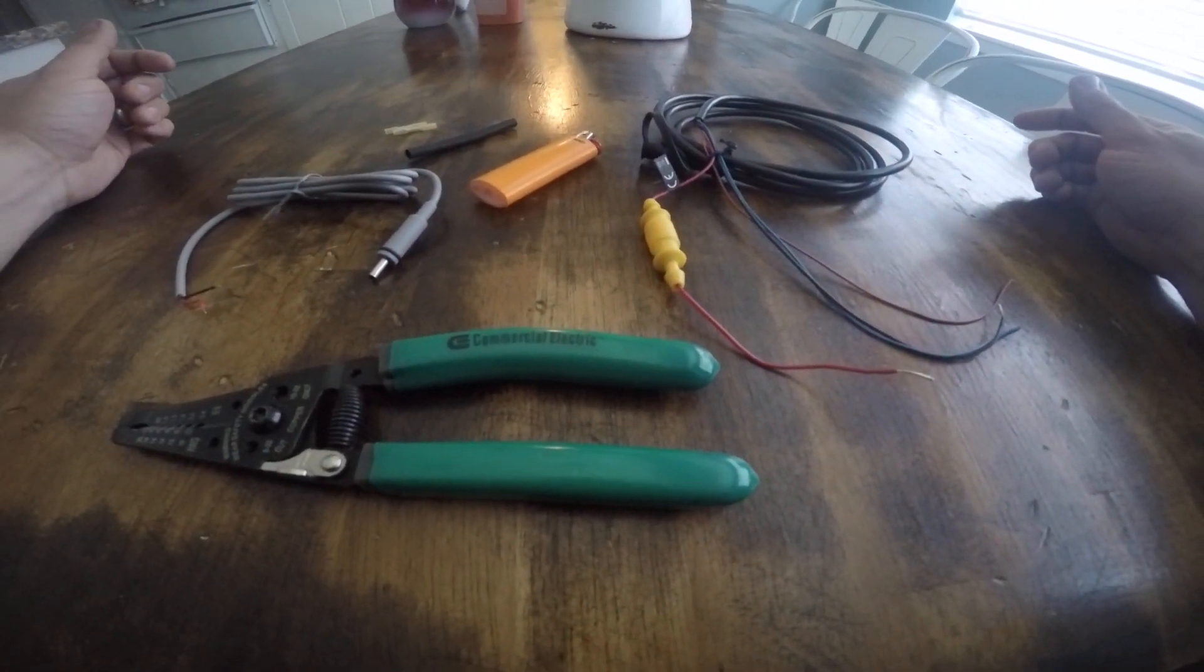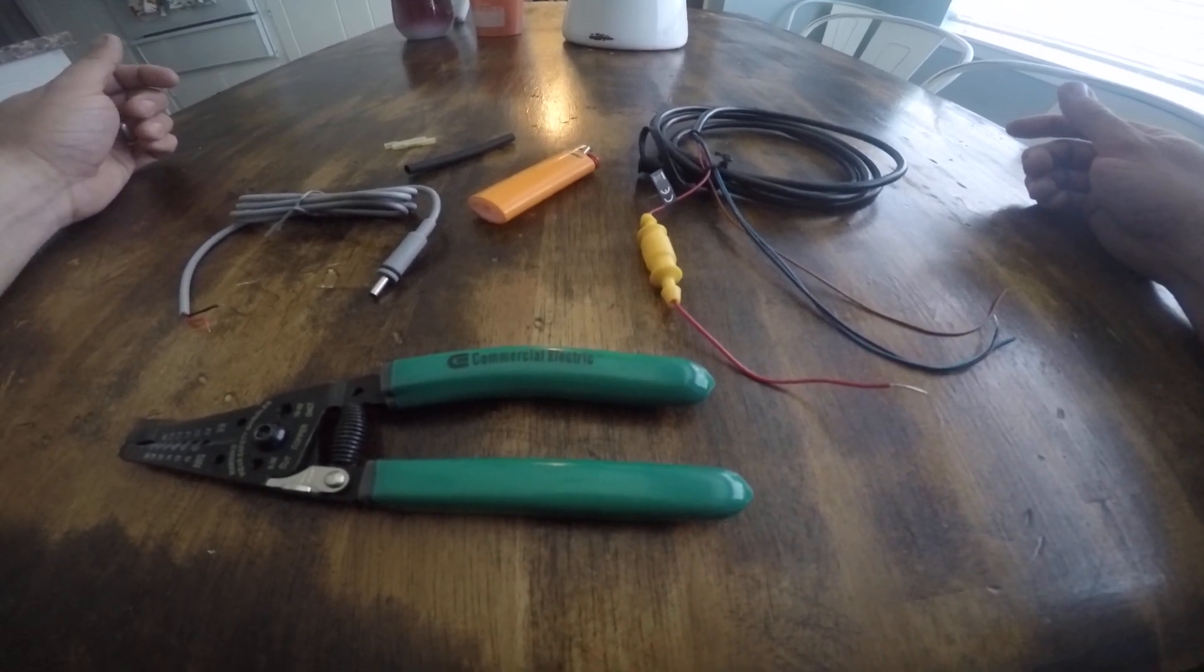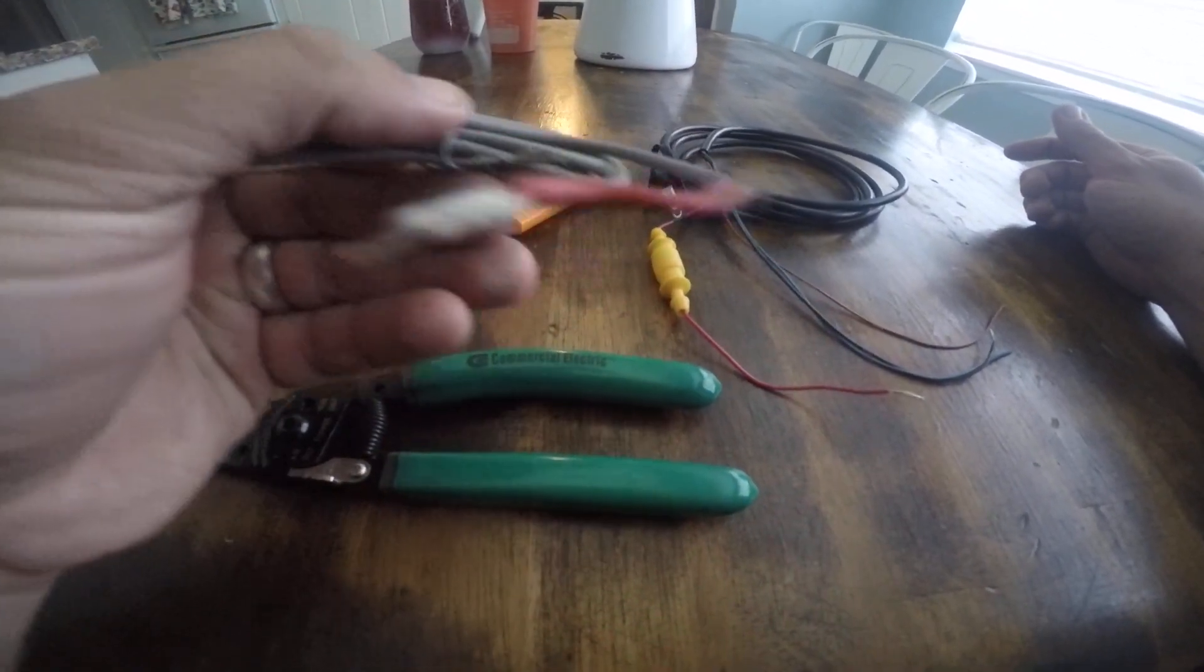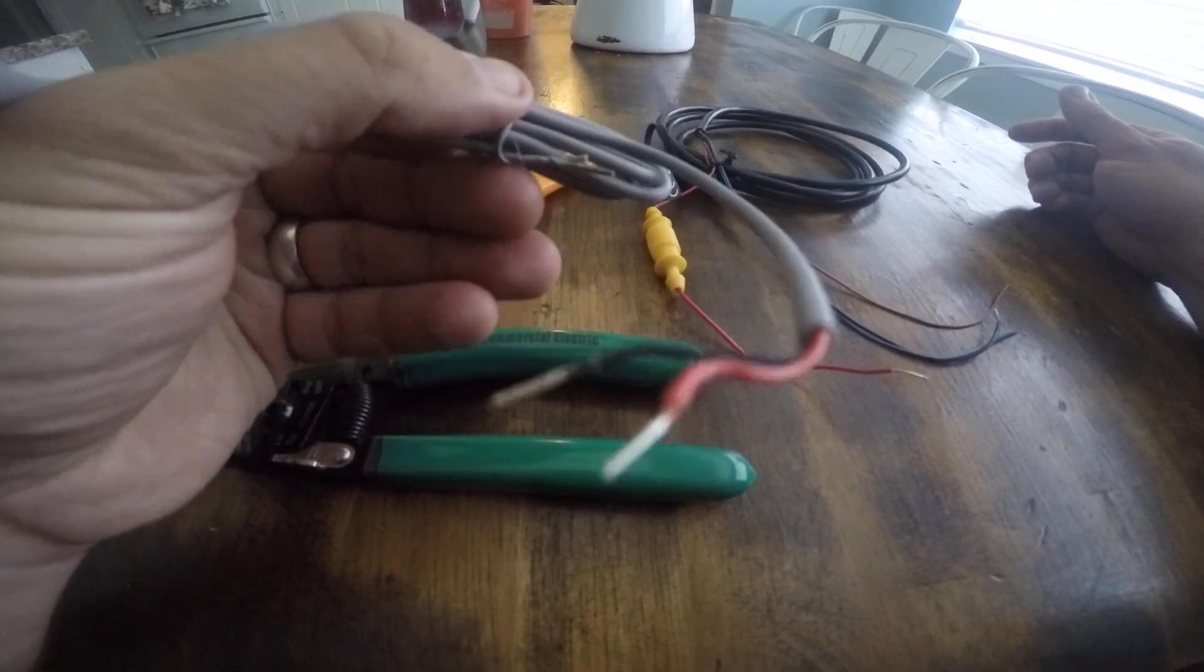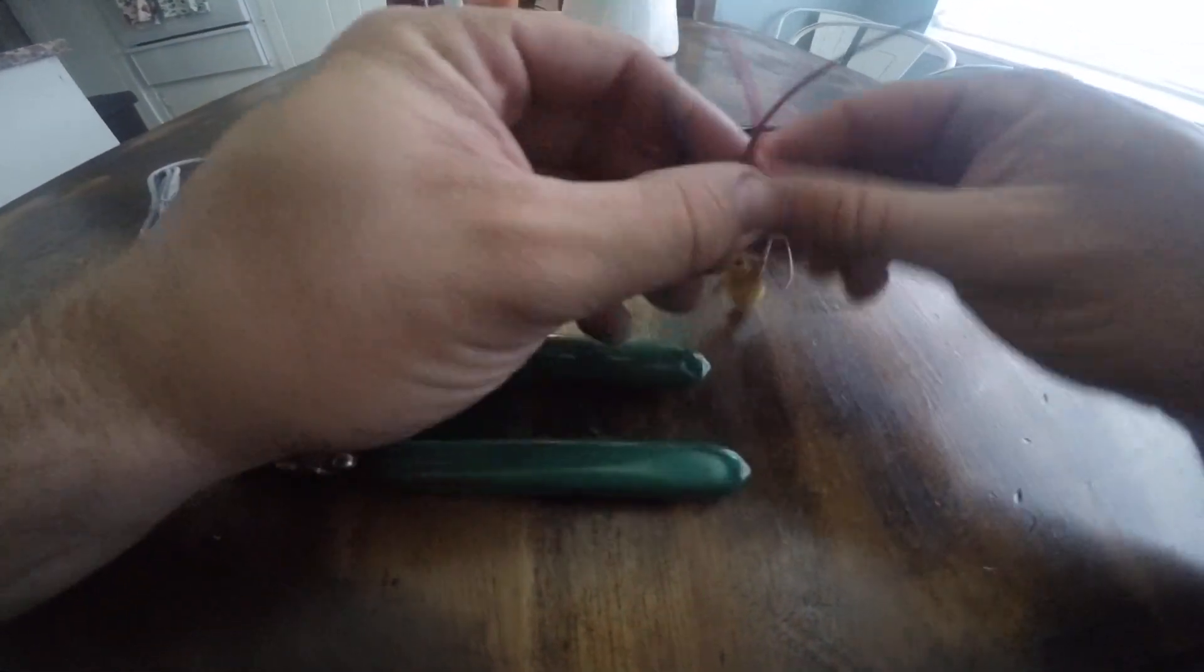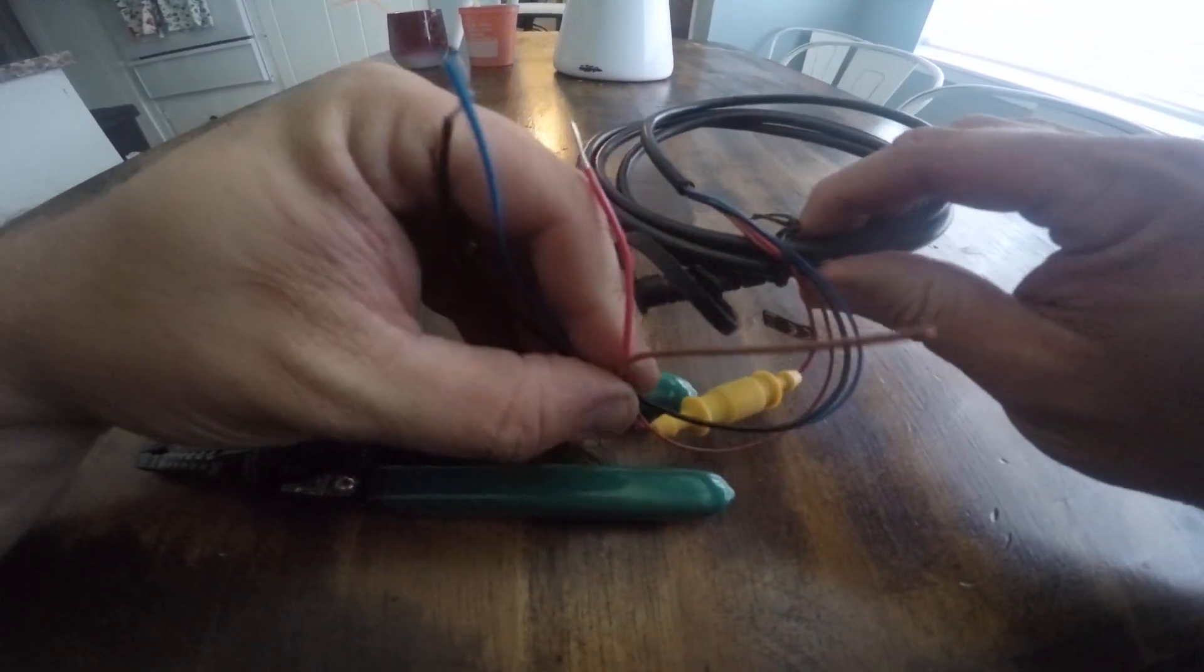Hey, welcome back to Reddirt Outdoorsman. Today I'm going to be showing you how to hook up the battery cable for the Wilderness Systems lithium-ion battery to the battery cable that comes with the Garmin Stryker 4.